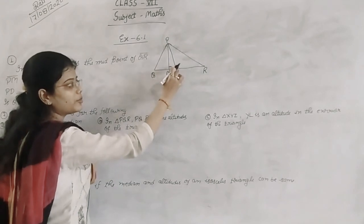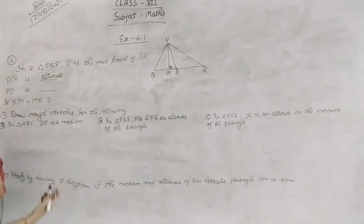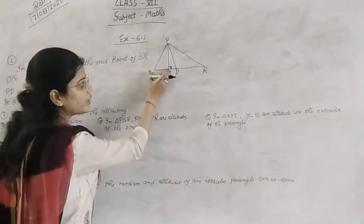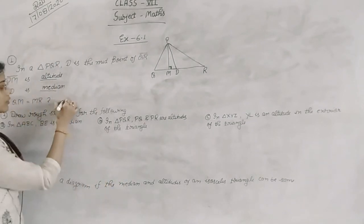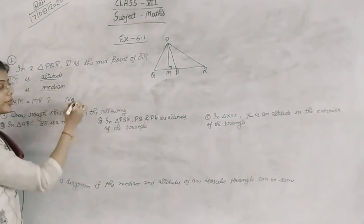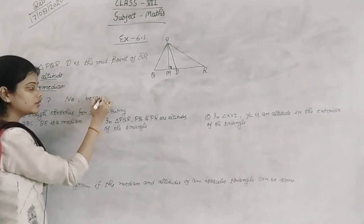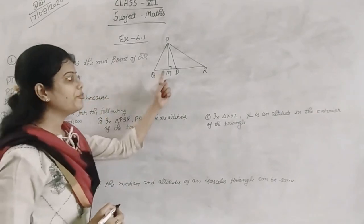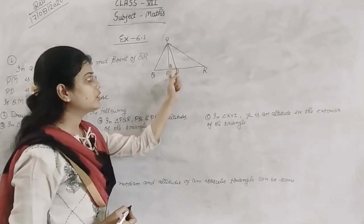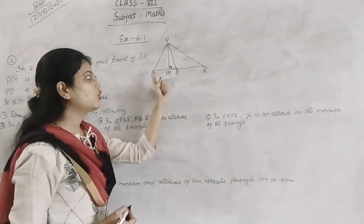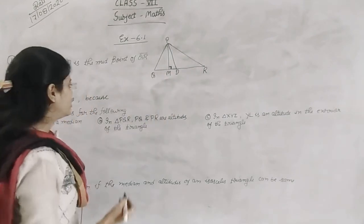The first thing you need to find in this type is called Median. But then is QM equal to MR? No. Why? Because the first thing I have said is QR side D, QD equal to DR, not QM equal to MR.